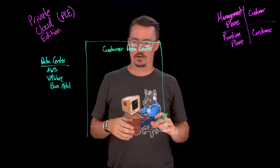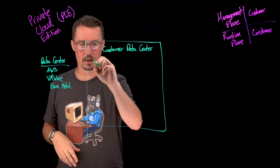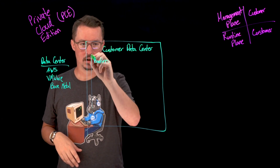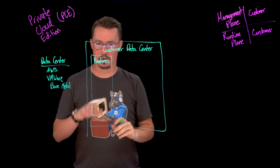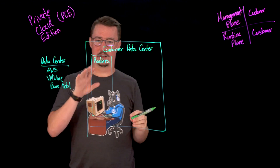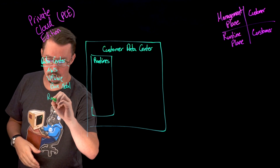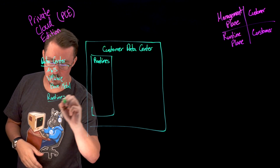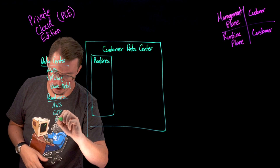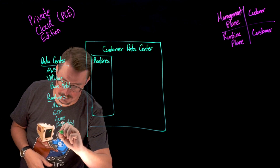Within the data center, we're basically going to have three different aspects. Firstly, it's going to be where we're actually hosting our runtimes. The runtimes can actually be deployed anywhere — it seems a little confusing that the runtimes can be hosted anywhere while the data center can only be on those three. But looking at where our runtimes can be hosted, that could be anything from AWS, GCP, Azure, bare metal, or really anything else.